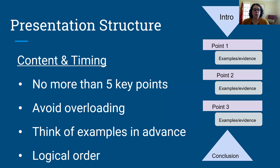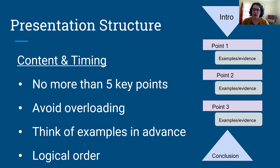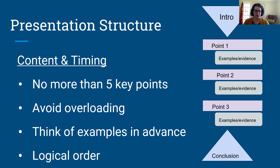You want to keep yourself to no more than five key points so you don't overload your audience. You'll have your introduction, then go through your key points and back those up with some examples and evidence. Once you've gone through your key points, transition right into your conclusion. Make sure you're putting things in a logical order — if they need information from point one before they can understand point two, make sure you sequence things properly. Also make sure you're thinking of your examples in advance, because it's no fun to be in the middle of a presentation and realize you need an example and are stuck trying to think of one on the fly.